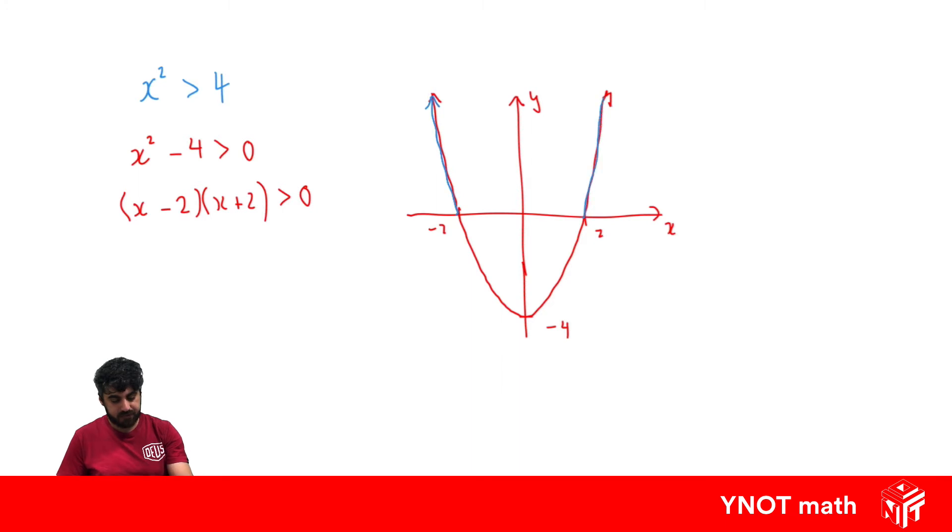We can see that it's above the x-axis here and here. Conversely, if it was less than, it would be where is it below the x-axis. We can see that it's above the x-axis whenever the value of x is smaller or less than minus 2, and whenever the value of x is bigger or greater than 2.